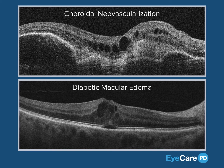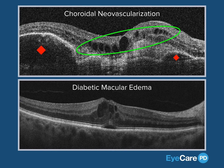For example, in the top image you note intra-retinal fluid, in combination with multiple pigment epithelial detachments and subretinal hyperreflective material. Thus, this is most likely an OCT image from a patient with choroidal neovascularization.